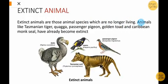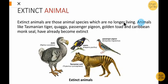What are extinct animals? Extinct animals are those which are no longer living on Earth. We have heard their names, but they no longer exist — they are completely finished.